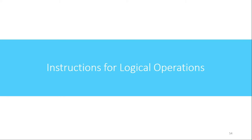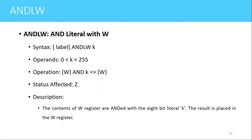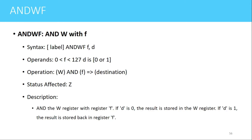Welcome. In this video we'll see the logical instructions present in PIC16F877 microcontroller. The first instruction is ANDLW. Using this instruction we can AND the literal value with the value present in the working register. The literal value is the immediate 8-bit data present in the instruction — L stands for literal and K is the 8-bit data. The value of K can be anywhere from 0 to 255, or in hex 0x00 to 0xFF. The value in the working register is ANDed with K and the result is stored in the working register. The Z flag is affected.